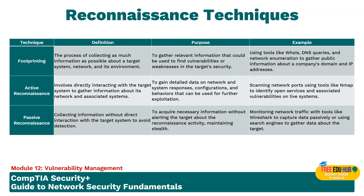Active reconnaissance involves directly interacting with the target system to gather information about its network and associated systems. This helps in gaining detailed data about network access configuration and behavior that can be used further for exploitation. Unlike passive reconnaissance, active reconnaissance could include methods like port scanning to identify open ports and services, sending crafted packets to systems to see how they respond, or even social engineering techniques. While active reconnaissance can yield detailed and specific information about system configuration and vulnerabilities, it can also alert intrusion detection systems, firewalls, and network administrators. An example is scanning with NMAP to identify open services and vulnerabilities.